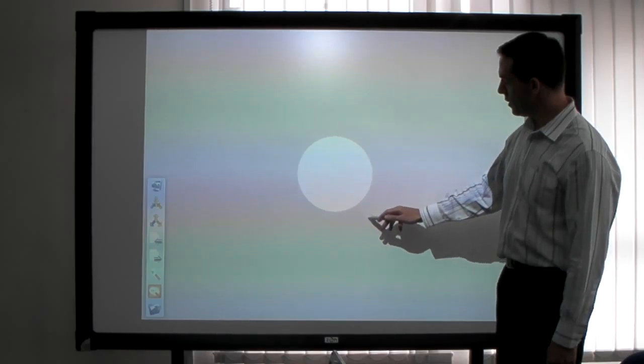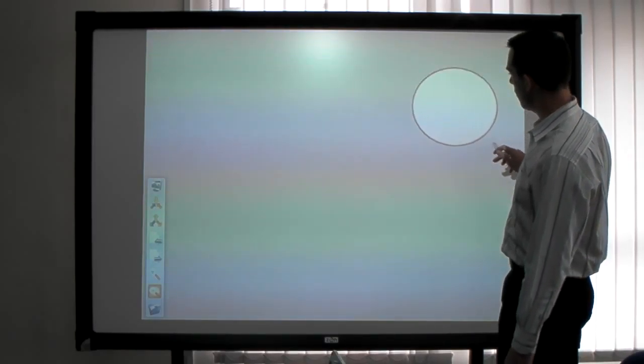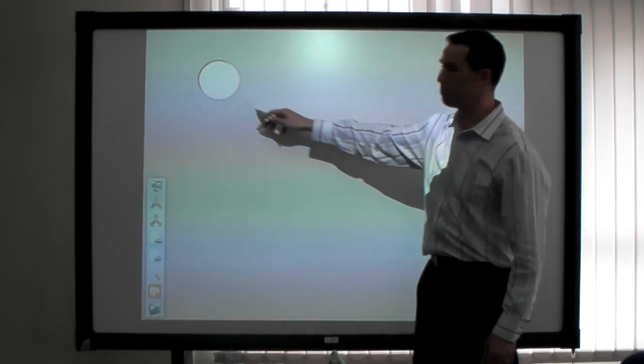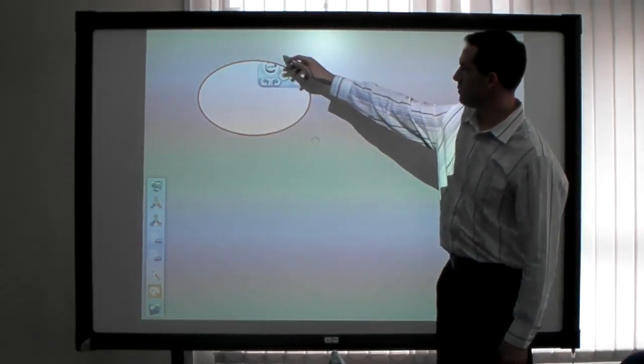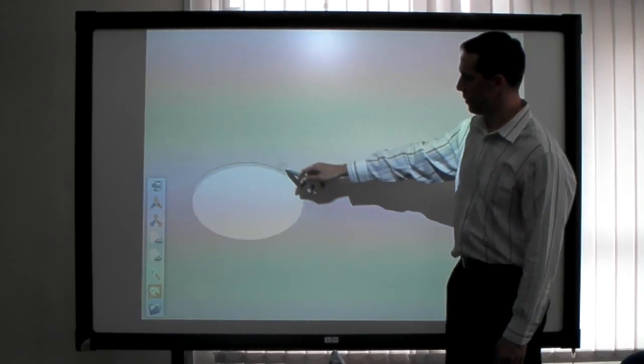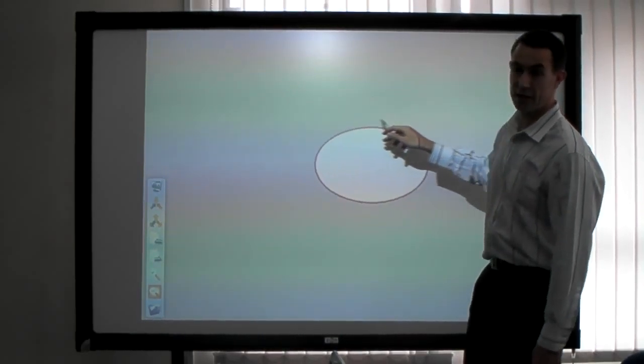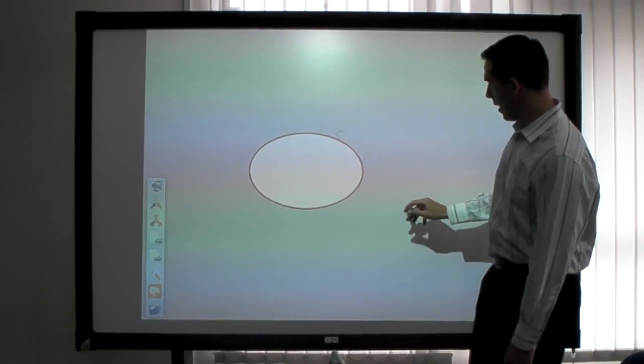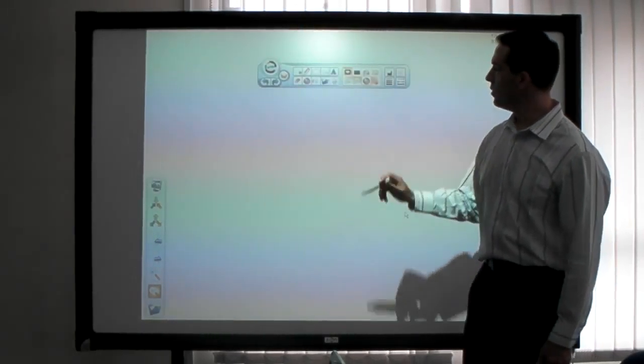You can either drag where you would like to reveal or spotlight certain aspects on the screen and then you can move that spotlight around for effect in the classroom. Double click removes that function.